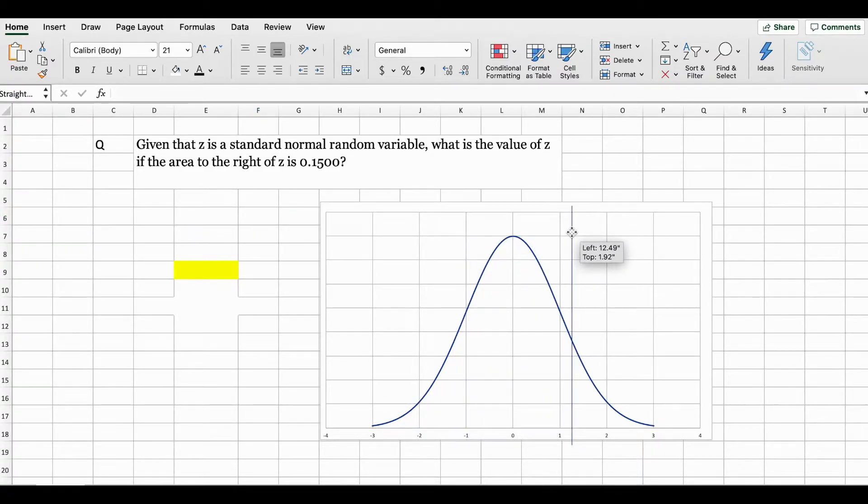So let's say our x value is right here at 1. So what the question is basically telling us is the probability on the right side should be equal to 0.1500, but we don't know the z value. So we need to find that z value.